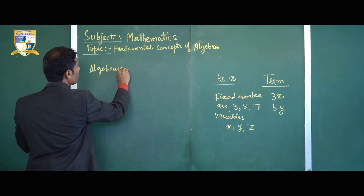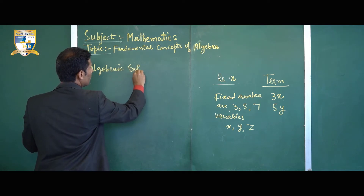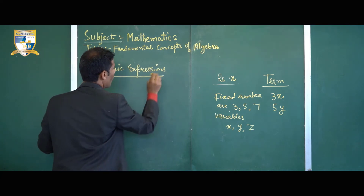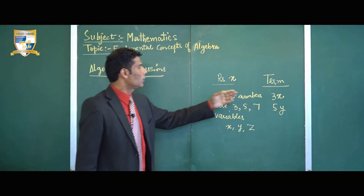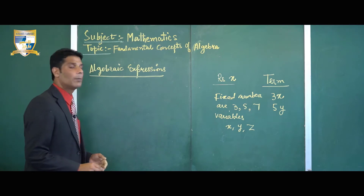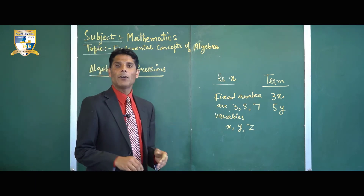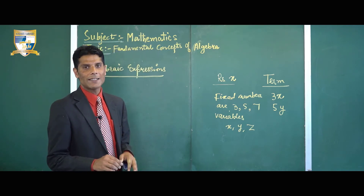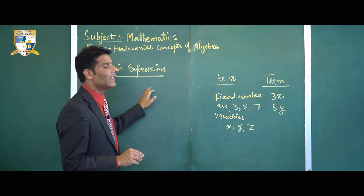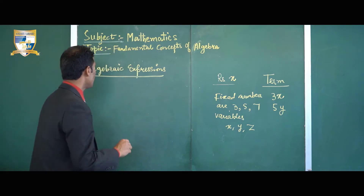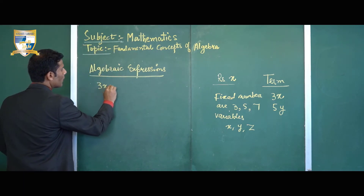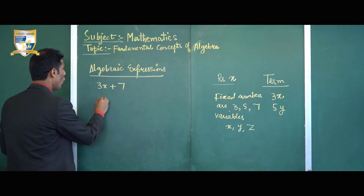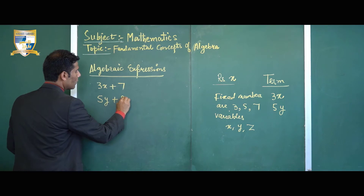So what is an algebraic expression? When terms are connected with mathematical operators like addition and subtraction, they form algebraic expressions. For example, 3x plus 7 is an algebraic expression, or 5y plus 2 is also an algebraic expression.